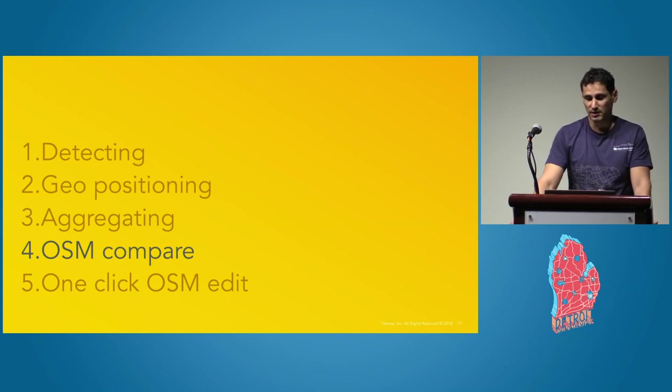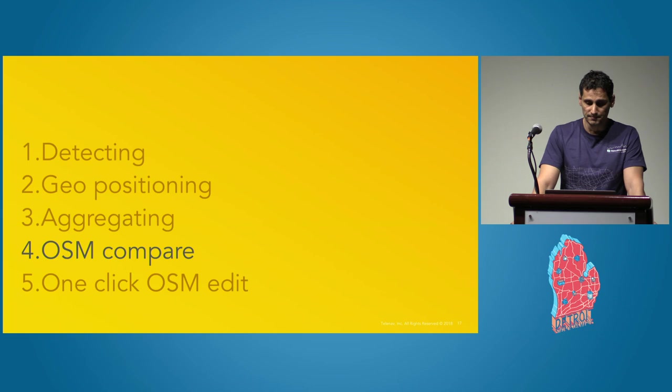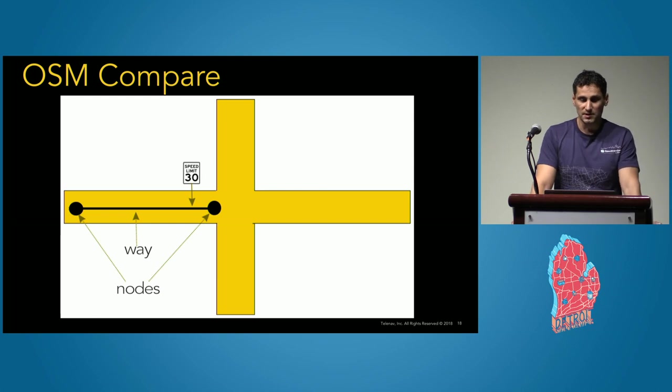On the fourth step, we are doing a comparison of the final estimated detection with the OSM, deciding whether something has to be added on the map or not. We call this step OSM compare. This process involves the following three phases: identify the closest way between two nodes having the same heading as the traffic sign; compare the sign with the corresponding ways attribute; if that attribute is missing or has a different value, probably we need to update the OSM. But what is the easiest way to do it? Our response is by means of one-click OSM edit.